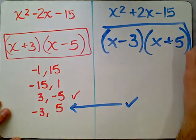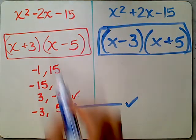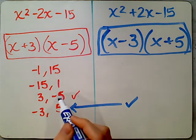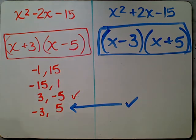Notice they're very similar questions, except for that middle term, that B value is negative 2 here, where it's positive 2 there. That leads to factors of negative 5 and positive 3 here and negative 3, positive 5 there.